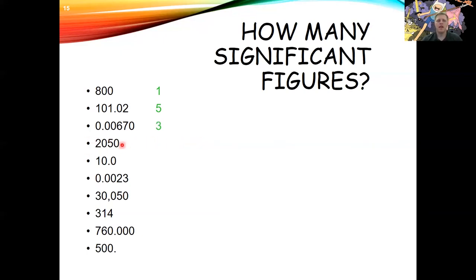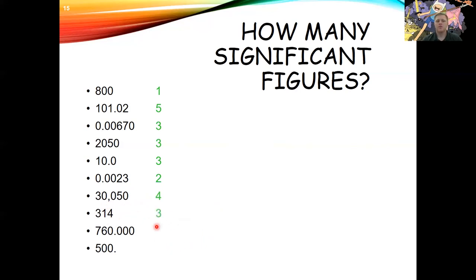The year 2050 has a trapped zero (significant) and a trailing zero with no decimal (not significant) — three sig figs. For 10.0: two trailing zeros with a decimal point, so three sig figs. For 0.0023: three leading zeros (not significant), and 2 and 3 are significant — two sig figs. For 30,050: two captured zeros (significant) and a trailing zero (not significant) — four sig figs. For 314: three sig figs. For 760.000: the decimal indicates all zeros are measured — six sig figs. For 500. (with a decimal): three sig figs.